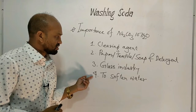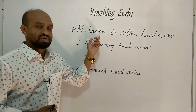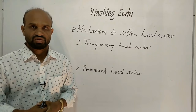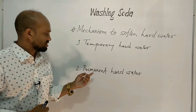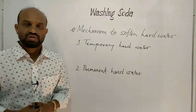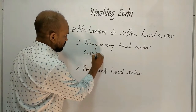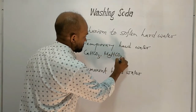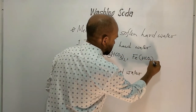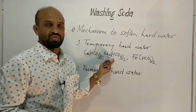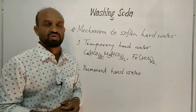Washing soda is also used in the glass industry to manufacture glass, and it is used to soften hard water. There are two types of hardness of water: temporary hardness and permanent hardness. When calcium bicarbonate, magnesium bicarbonate, and iron bicarbonate salts are dissolved in water, this water is called temporary hard water.